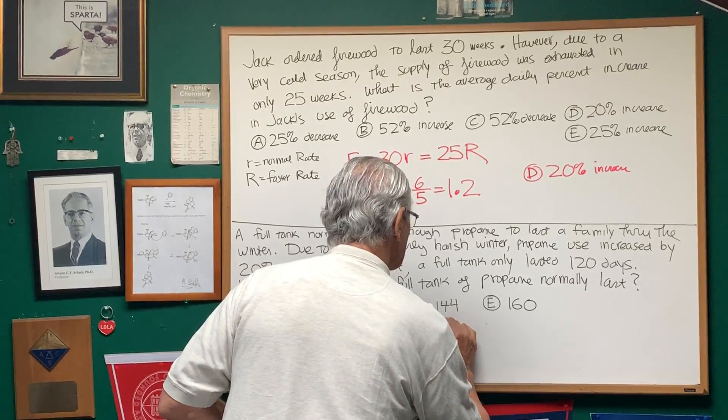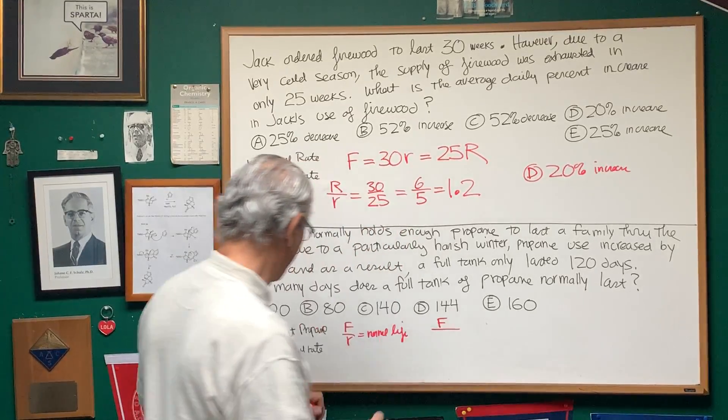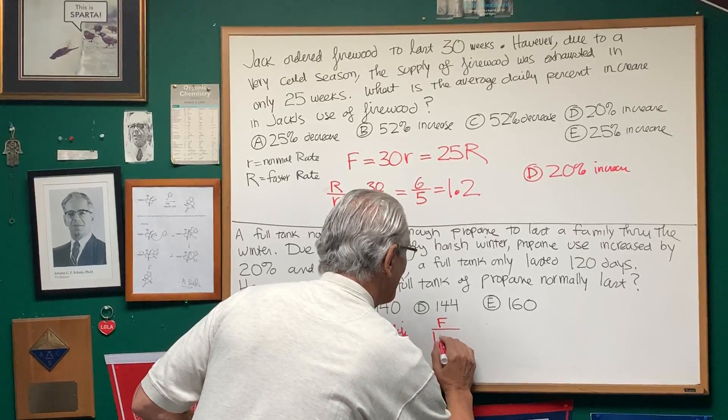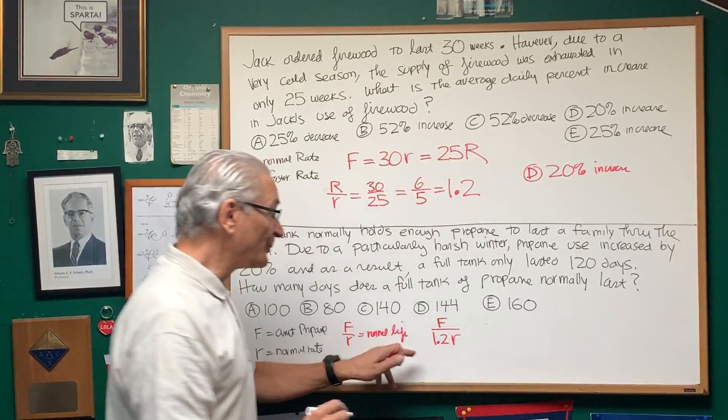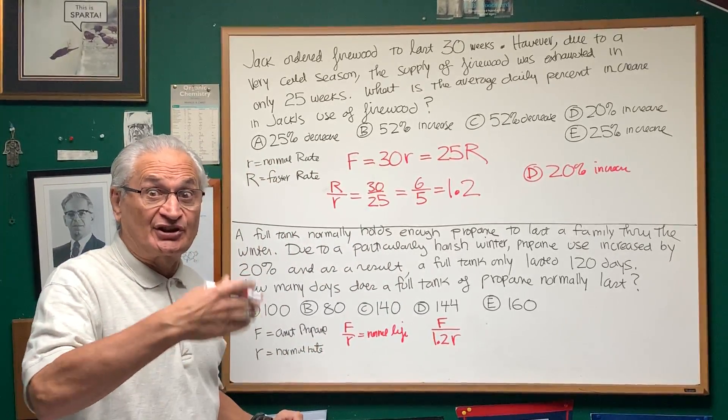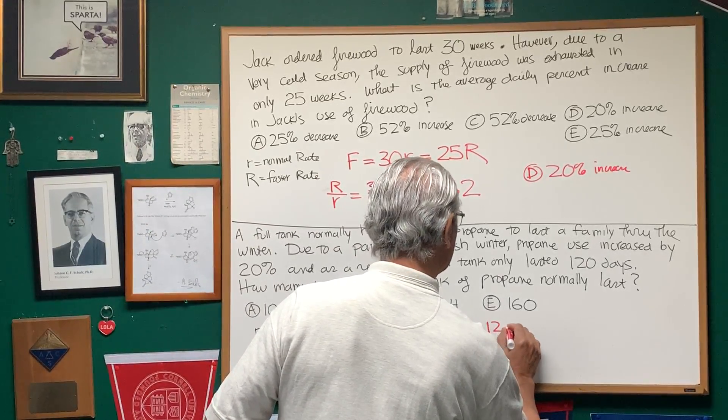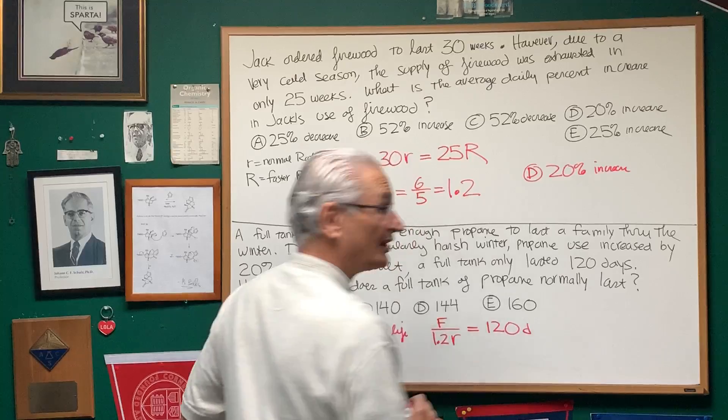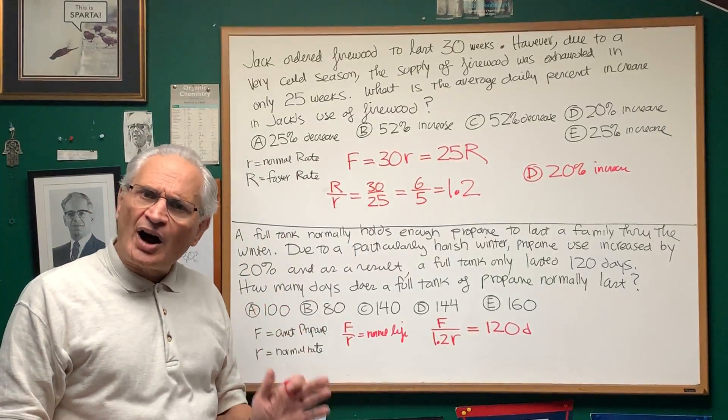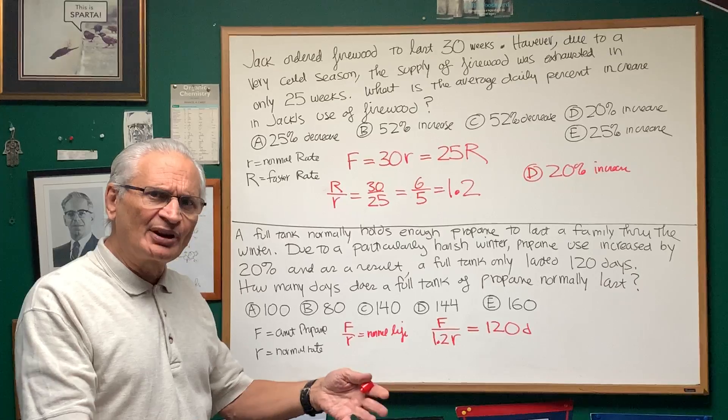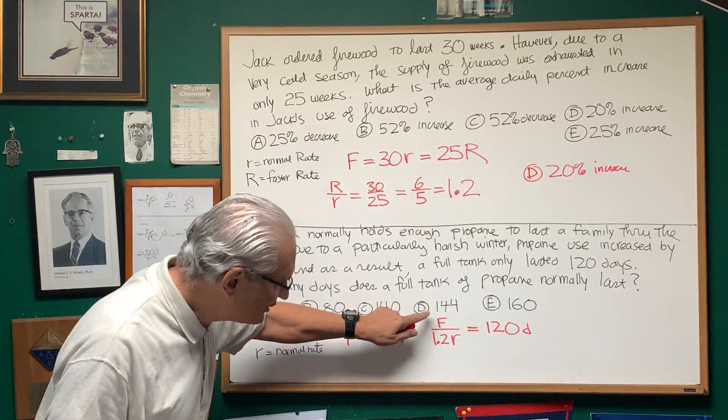So what we're going to do is form this equation. We have the total amount of propane, but the rate is going to be 20% higher. That's going to be represented by 1.2 times r, 20% higher than the normal rate. And the number of days that's going to last is 120 days. The quantity that's being asked for is the normal life, the normal length of the usage of propane. In other words, F over r.